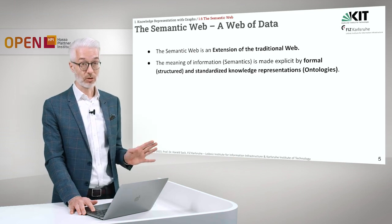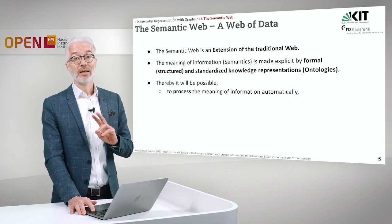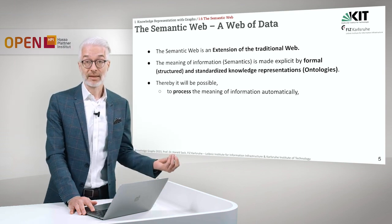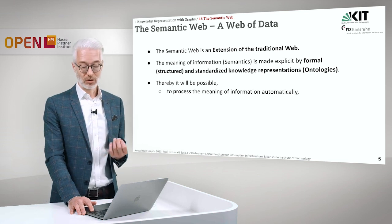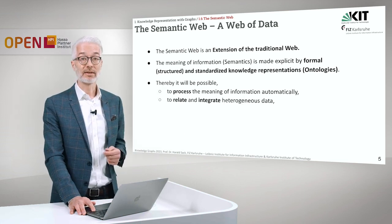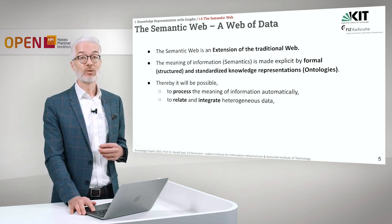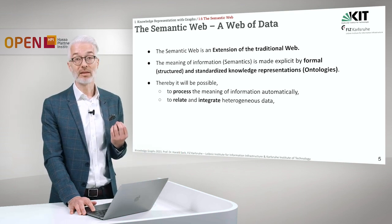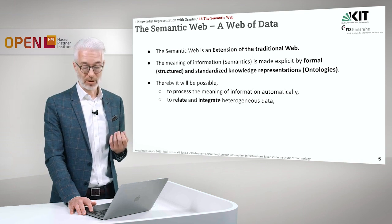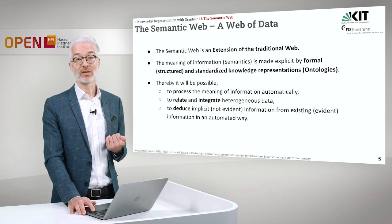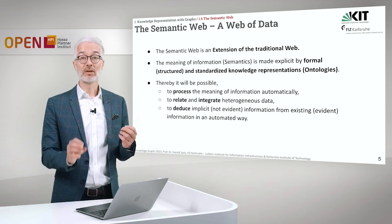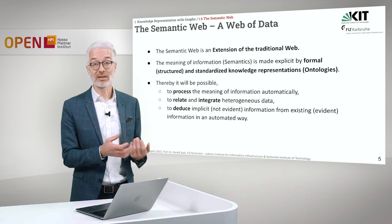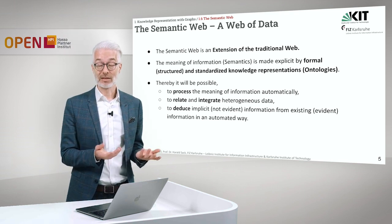We will also formally define what an ontology is. If we are using explicit knowledge representation, it will be possible to process the meaning of information automatically, as we have seen in the last section of the lecture. And to relate and to integrate heterogeneous data, so data interoperability is easily possible based on semantic web standards.